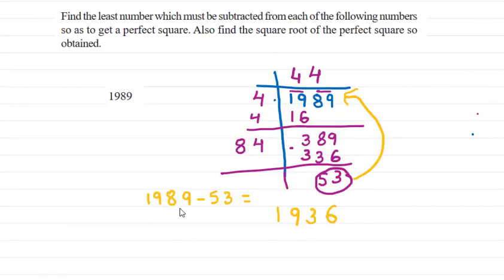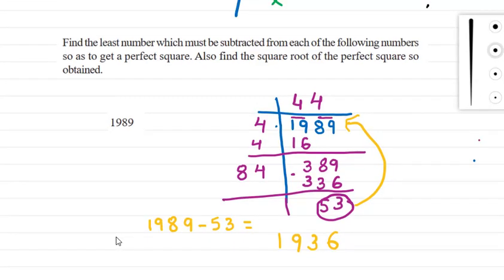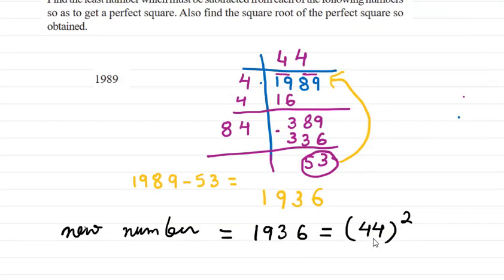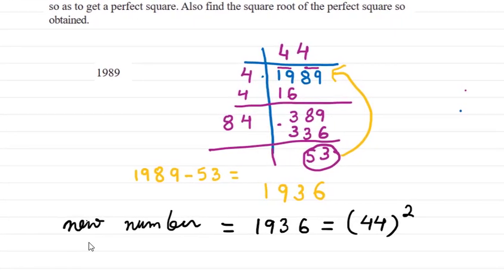After subtracting from 1989 we will get 1936. Now this 1936 is the square of which number? 44. So now your new number is 1936 equals 44 squared, and the number which you have subtracted is 53. Number to be subtracted is 53, and the new number is 1936. This is how you will do this question.